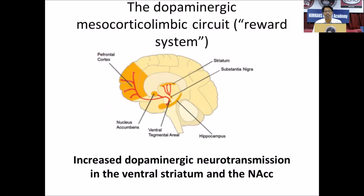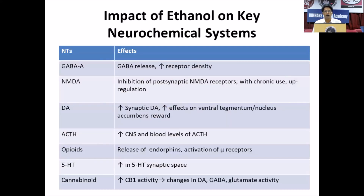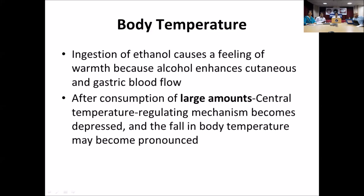This is the main reward pathway in our brain: the ventrotegmental area, nucleus accumbens, and prefrontal cortex are the main important structures, along with substantia nigra. Alcohol increases dopaminergic neurotransmission in these areas. Through dopamine receptors, acetylcholine receptors, opioid receptors, and cannabinoid receptors, all these interactions increase dopamine levels in the ventrotegmental area and finally in the nucleus accumbens, leading to disinhibition behavior.